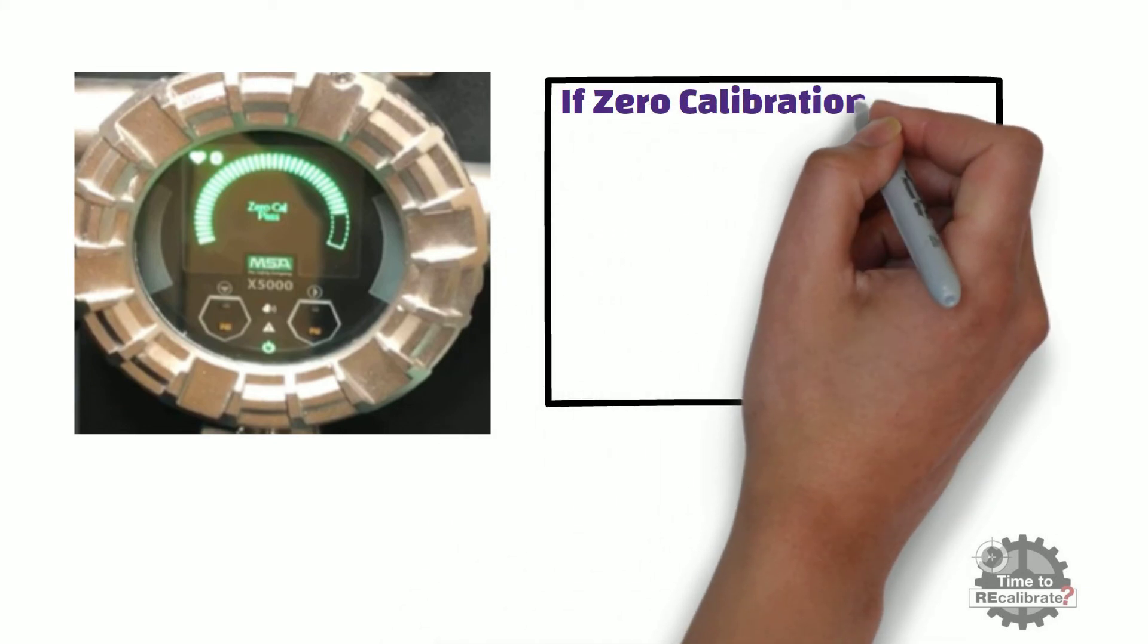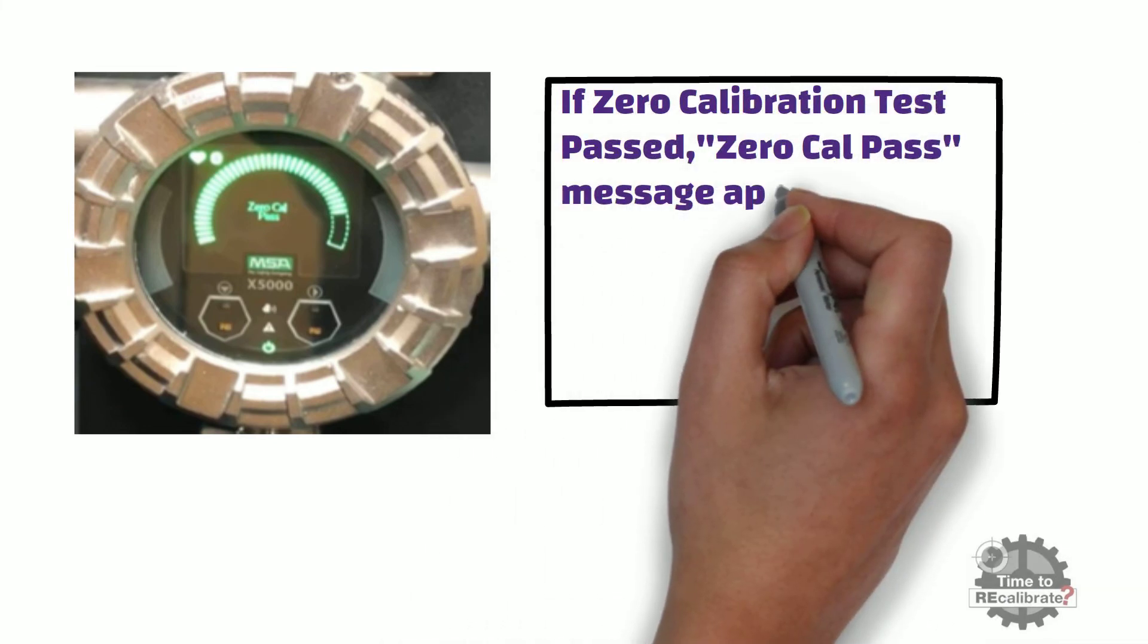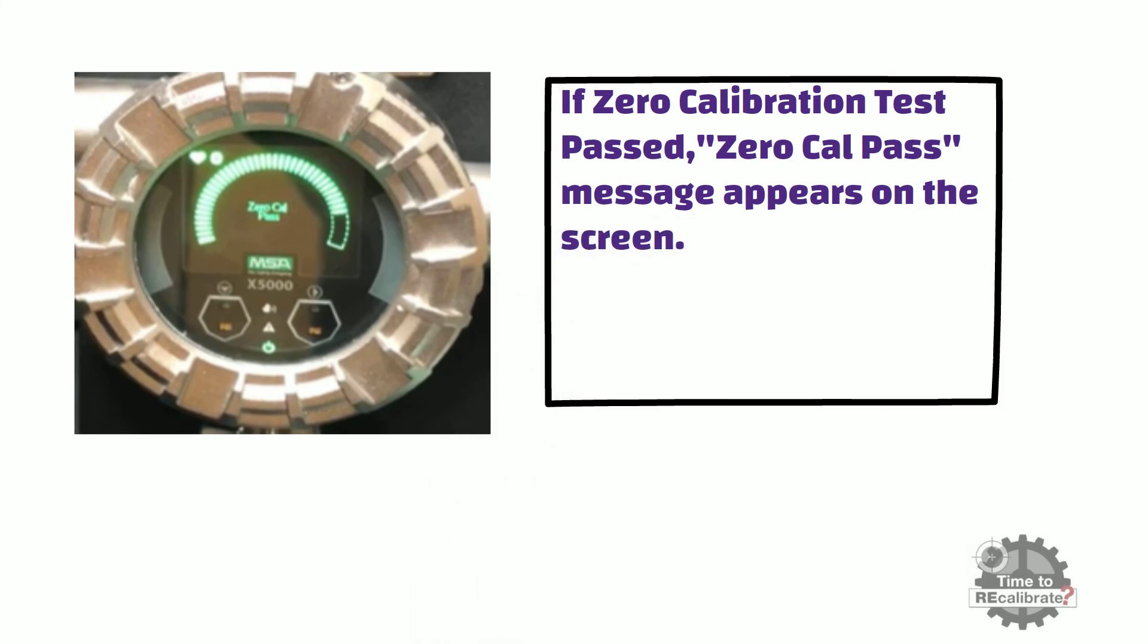As you can see from the picture, if zero calibration is passed successfully, zero cal pass will display on the screen for a few seconds. After this, the screen will display apply span gas.